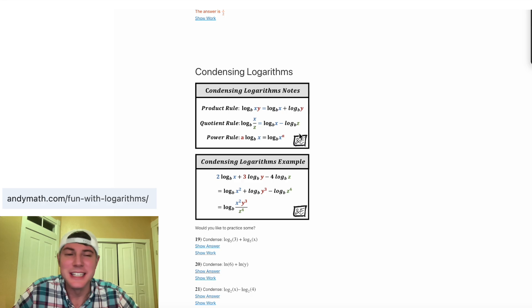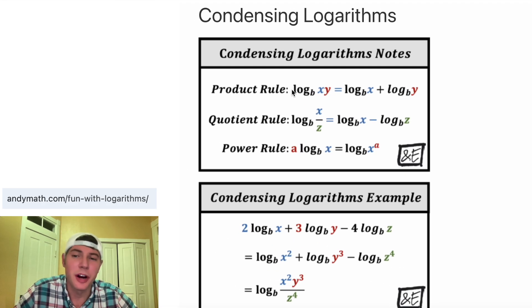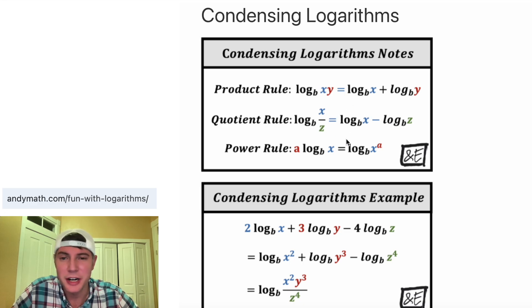So then we can move on to condensing logarithms. And I have some notes here. You're going to use product rule, which means that if they're multiplied on the inside, it splits into two logs that are being added. Quotient rule is if it's divided on the inside, it splits into two logs that are being subtracted, where the thing being subtracted goes on bottom.